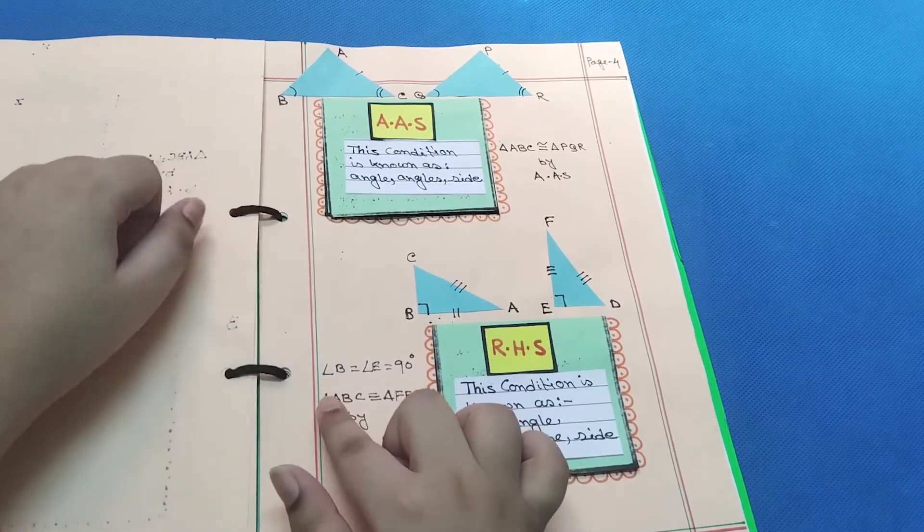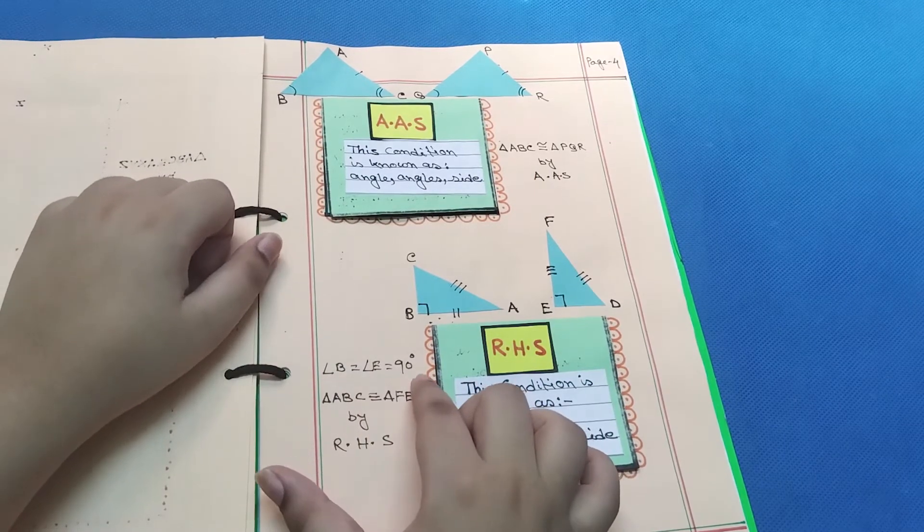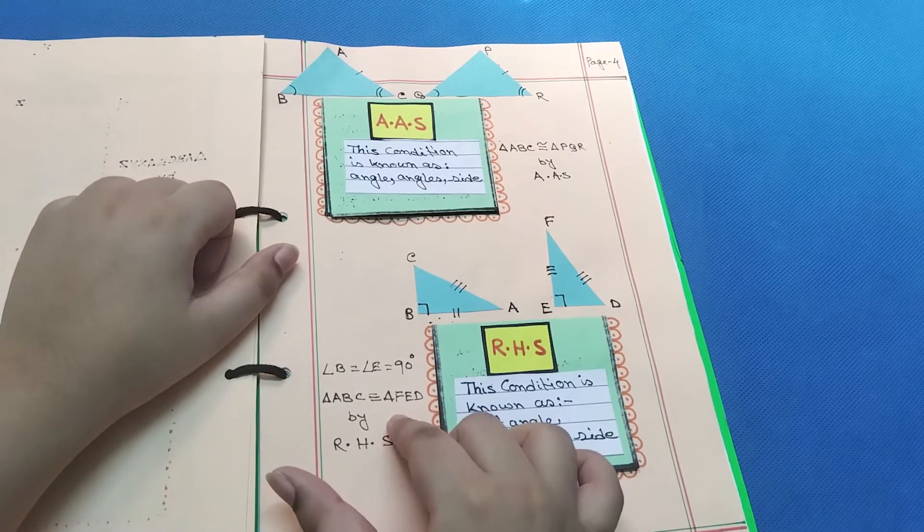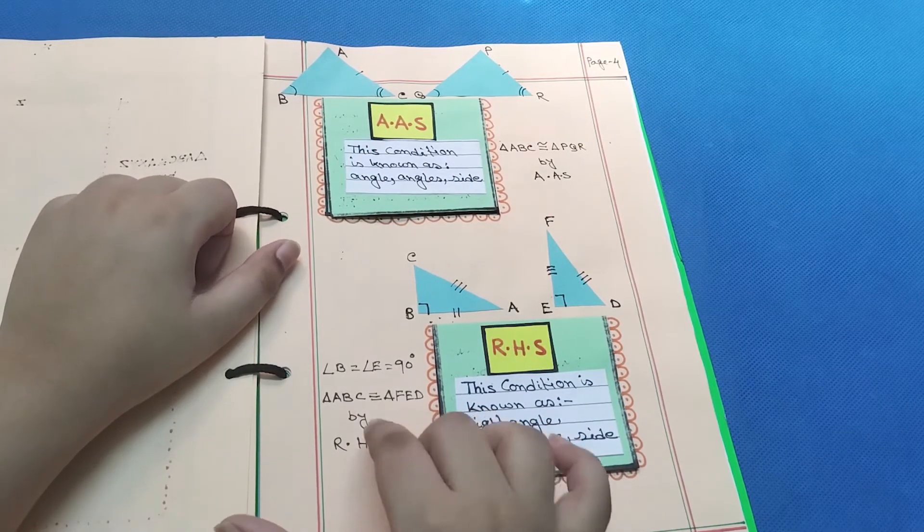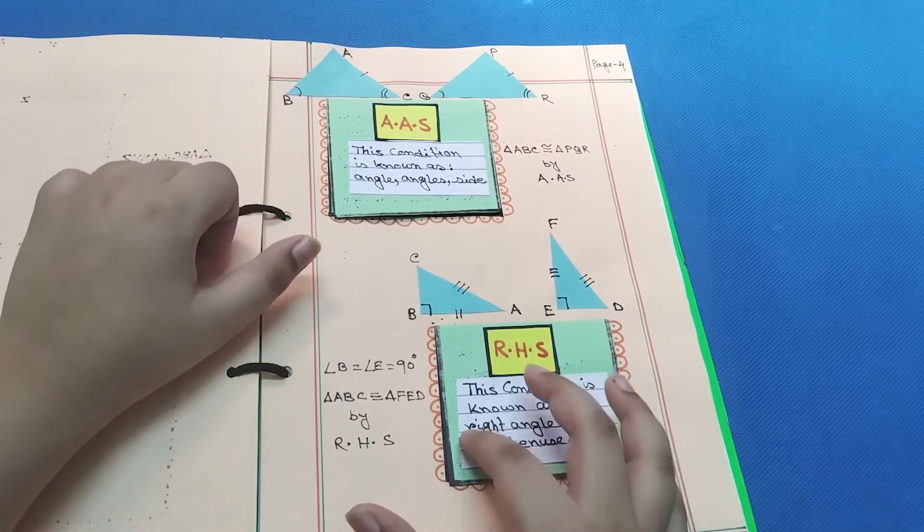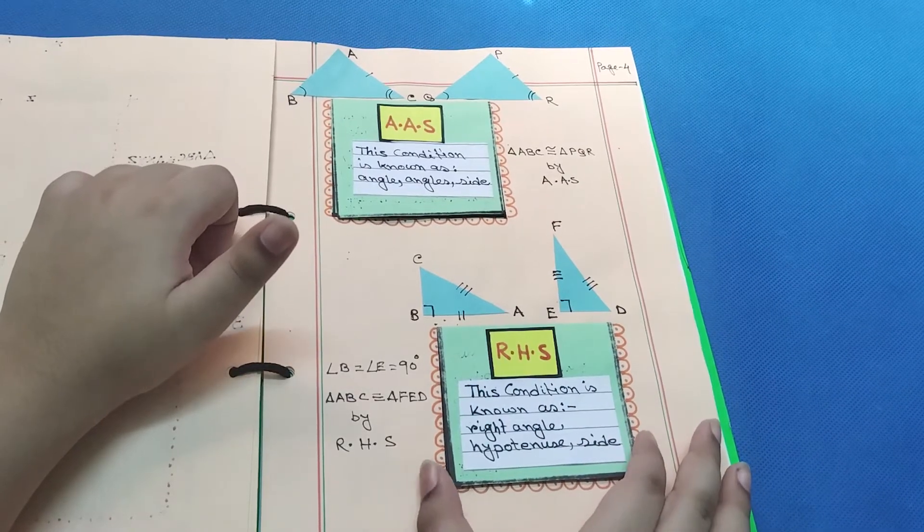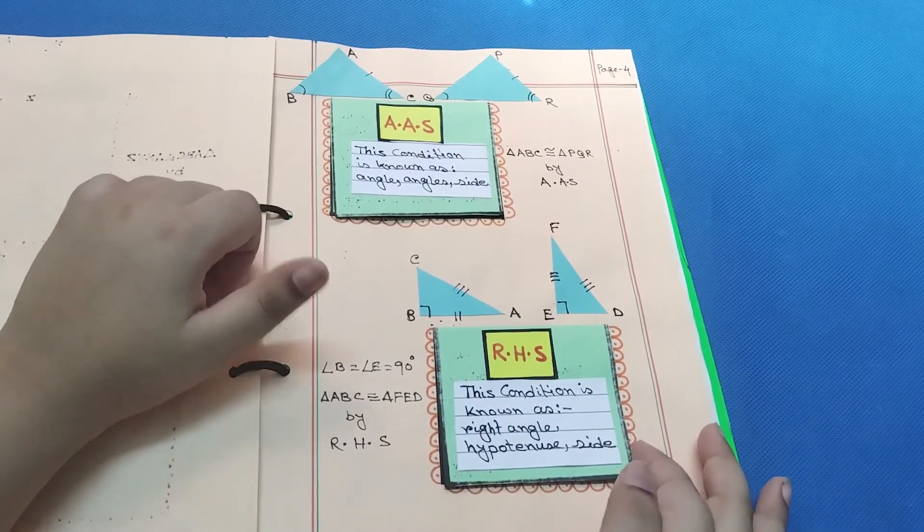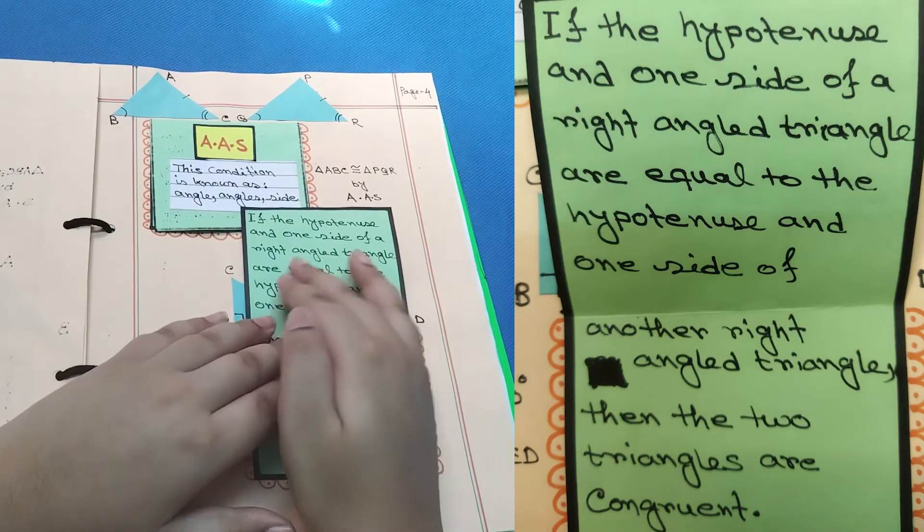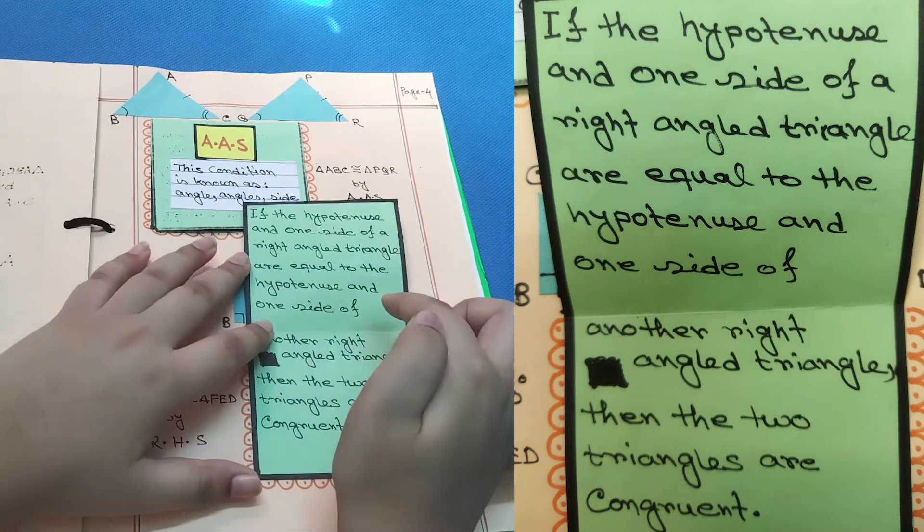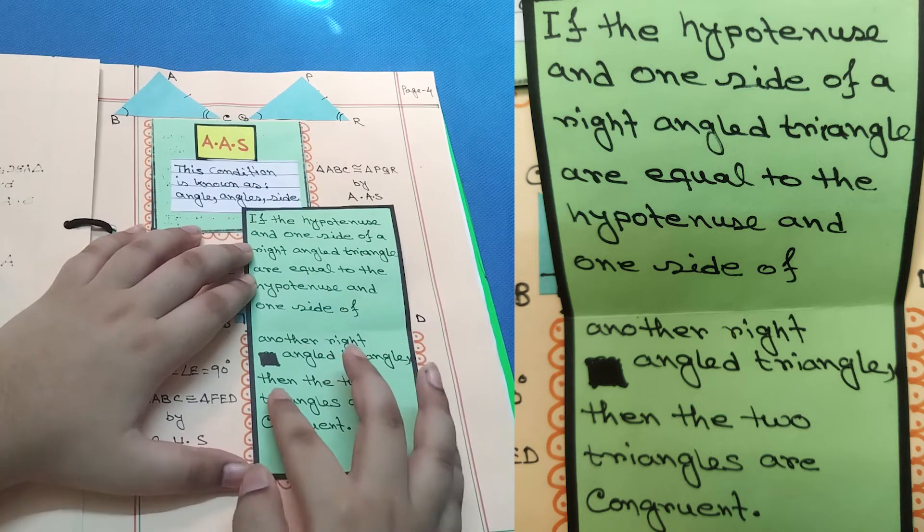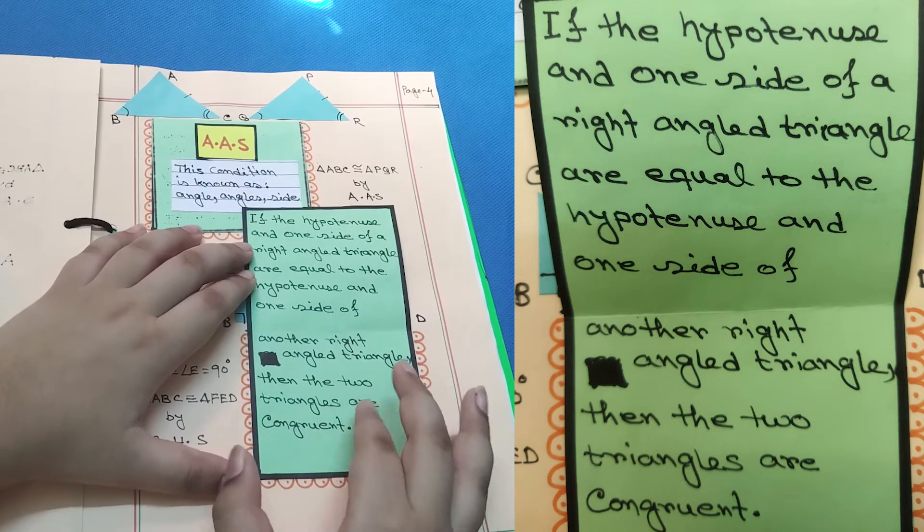Let me tell you what it means. Angle B equals angle E equals 90 degrees, and triangle ABC equals triangle FED by RHS. RHS, this condition is known as Right angle-Hypotenuse-Side. If the hypotenuse and one side of a right angle triangle are equal to the hypotenuse and one side of another right angle triangle, then the two triangles are congruent.